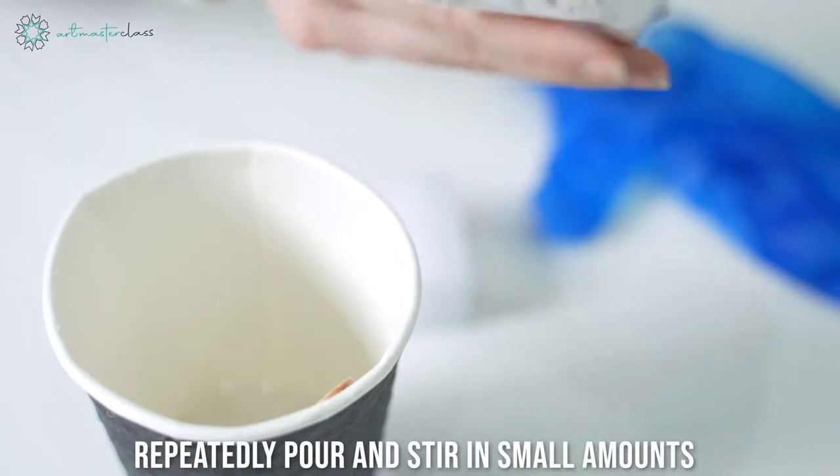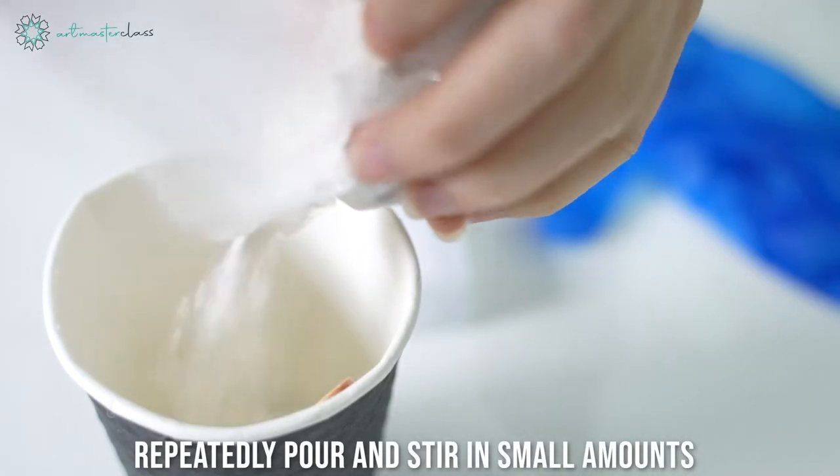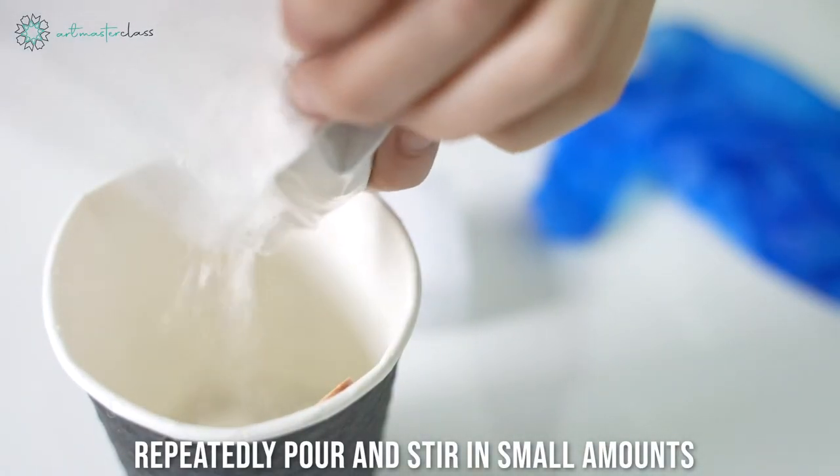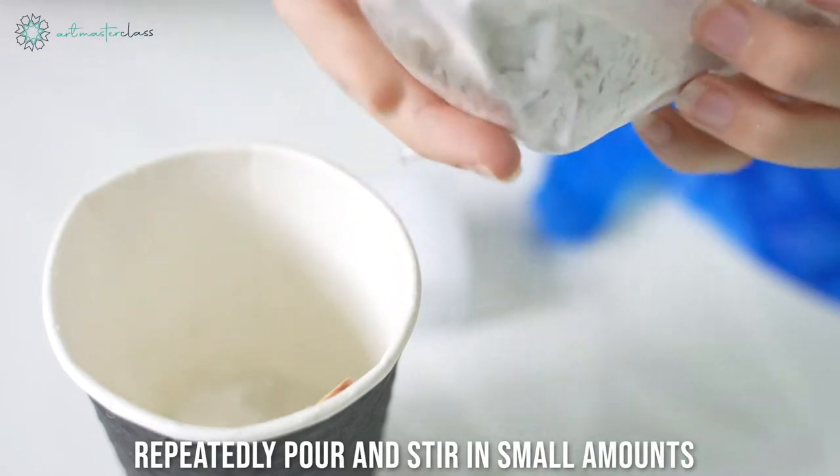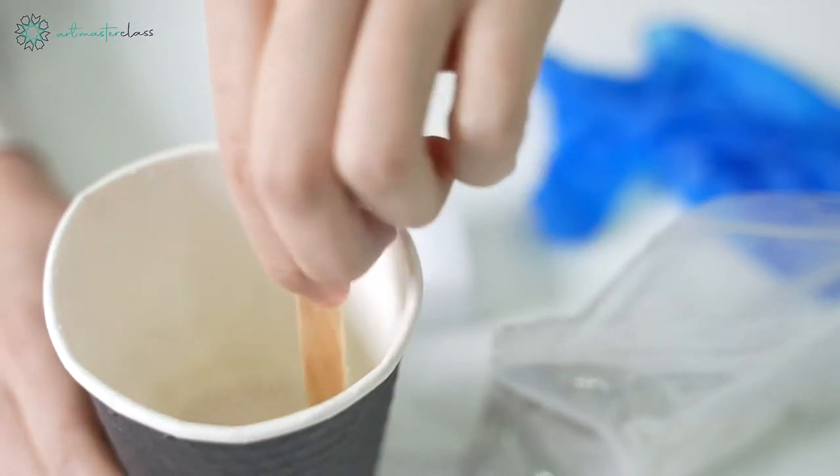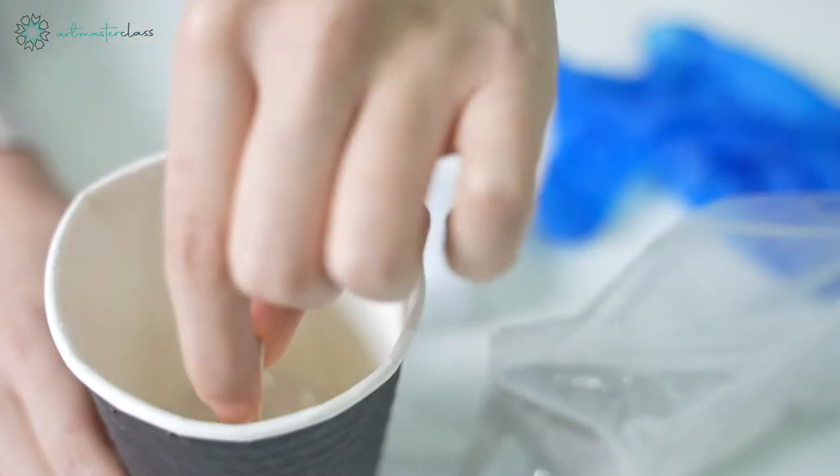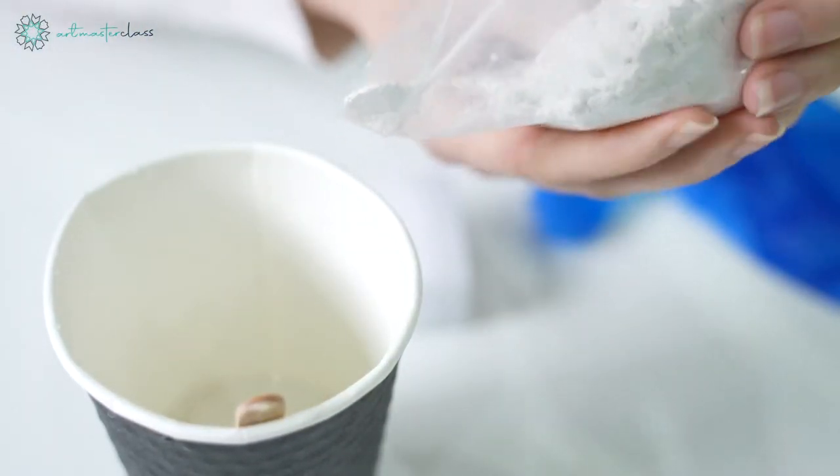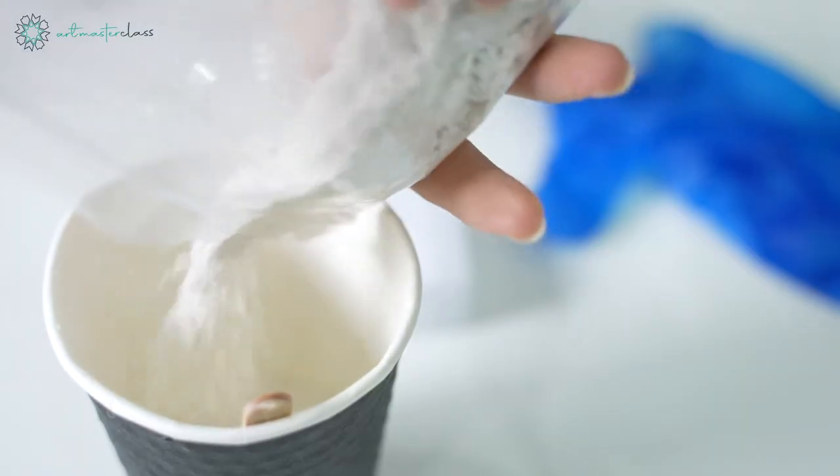When you begin this process, it is very important to not pour the water directly onto the plaster. Instead, make sure to add a small amount of plaster powder onto the water and mix repeatedly. Repeat this process three to four times until all of the plaster has mixed with the water.